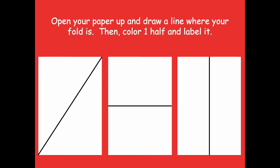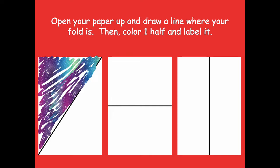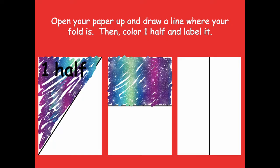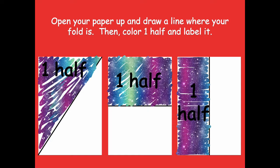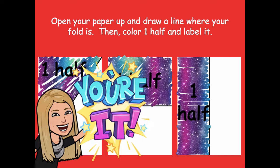Now I want you to open your paper and draw a line where the fold is, then color one half and label it one half. Whichever way you split your paper into halves, you'd draw a line down the middle, color in one half, and label it one half. Pause the video and do that with your paper.